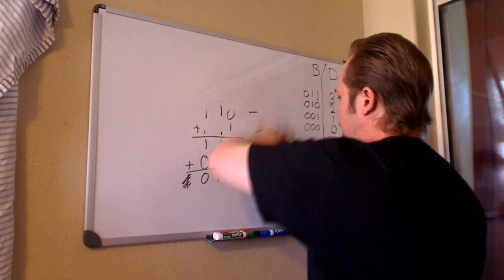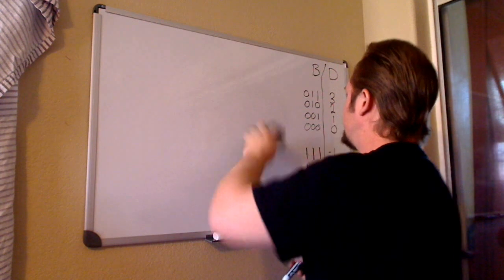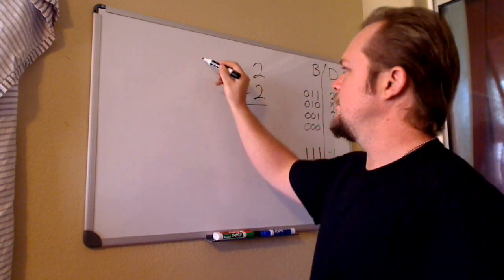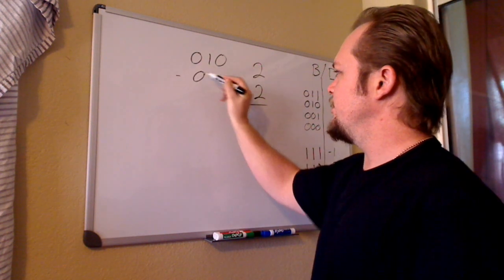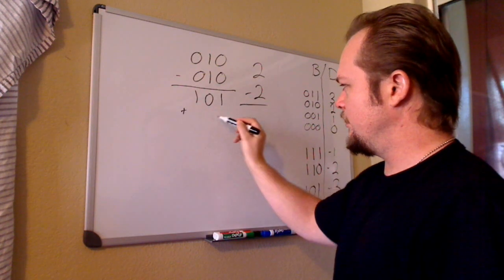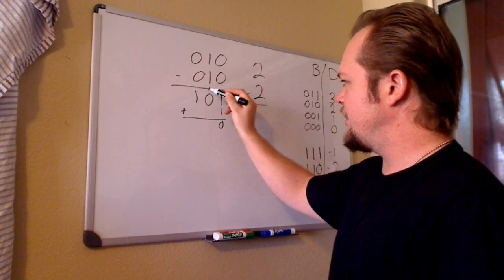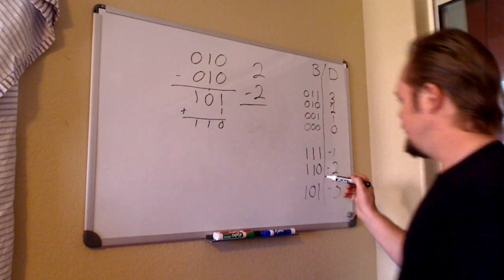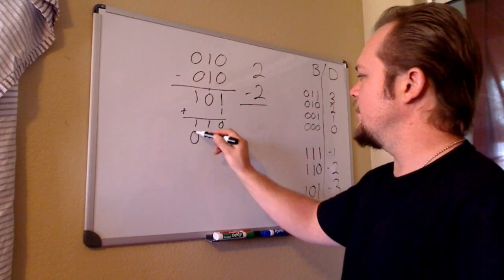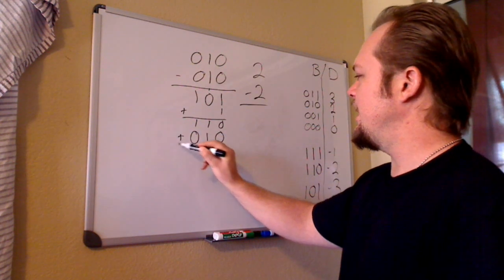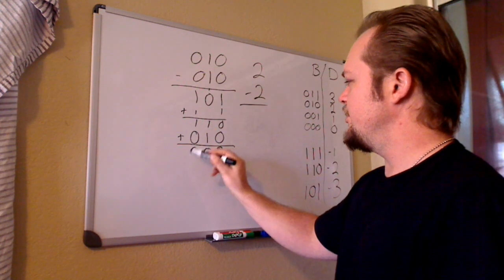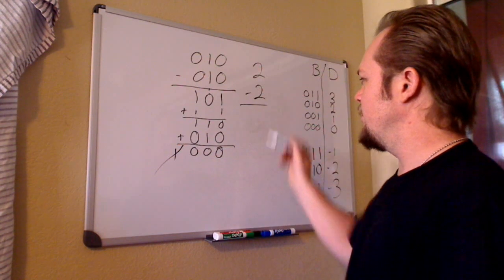Let's do two minus two. Two is zero, one, zero minus zero, one, zero. Invert the bottom number: one, zero, one. Add one: one and one is zero, carry the one, one and one — one, one, zero is our negative two. Take our top number zero, one, zero and add: zero and one is one, one and one is zero — carry the one, one and one is zero — carry the one. Truncate it — zero, zero, zero. That's the correct answer.